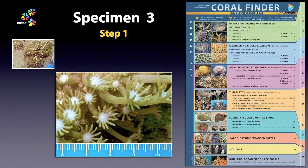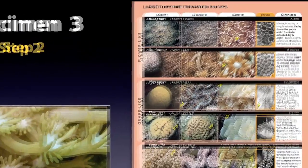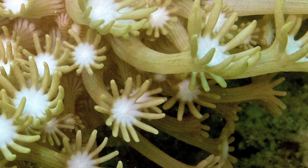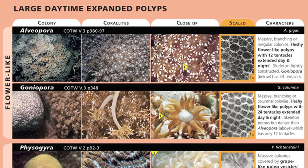Specimen 3. There is no prize for guessing this key group — let's rush over to the large, daytime-expanded polyps. Clearly, we are dealing with one of the two flower-like genera, Alveopora and Goniopora, which the Coral Finder tells us can be separated by the number of tentacles. Count them — and the winner is Alveopora. Tip: if you are having trouble counting the tentacles underwater, it's probably Goniopora.